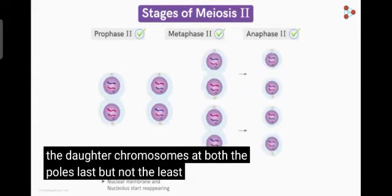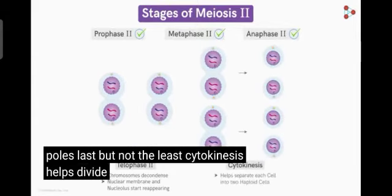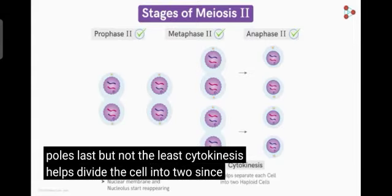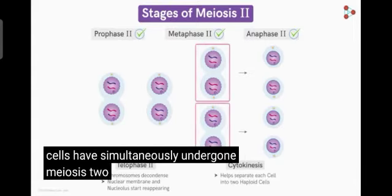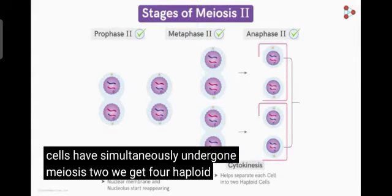Last but not the least, cytokinesis helps divide the cell into two. Since two cells have simultaneously undergone meiosis II, we get 4 haploid cells at the end.